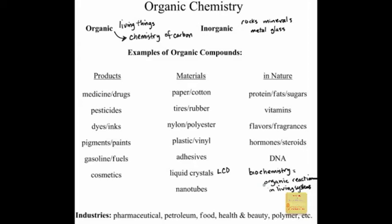As you can see, there are a lot of interesting things in store for us. As an organic chemist, there's a wide variety of industries in which you could be involved: the pharmaceutical industry, petroleum, food, health and beauty, polymer, and the list goes on. I was a biology major when I took organic chemistry as an undergraduate, and I was so excited about the topic that I ended up changing my major to chemistry and studying organic chemistry in graduate school.